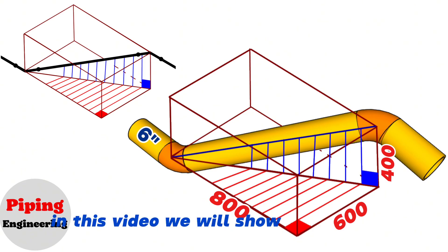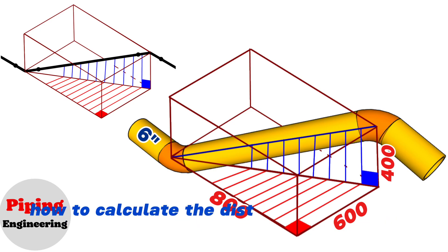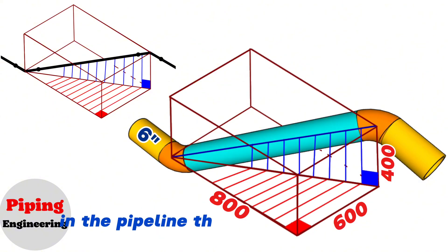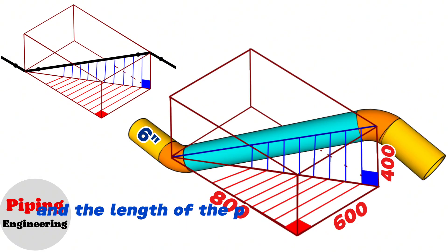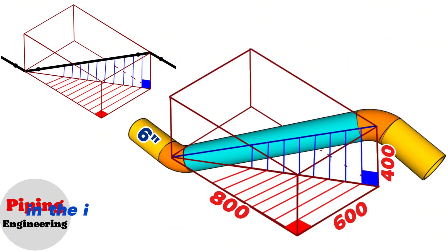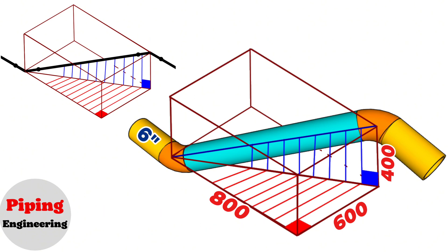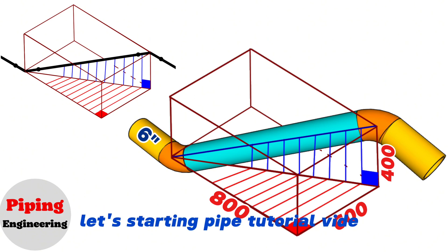In this video we will show step by step how to calculate the distance between the centers of the elbows in the pipeline, the cut elbows length, and the length of the pipe piece between these elbows in the isometric drawing and 3D model view of the pipeline. Let's start the pipe tutorial video.